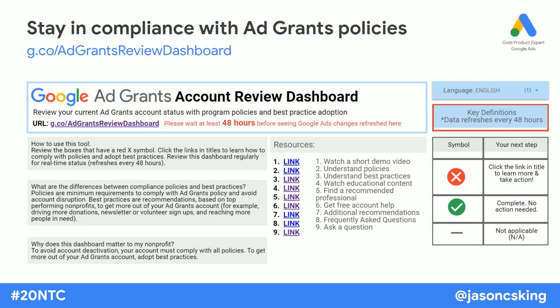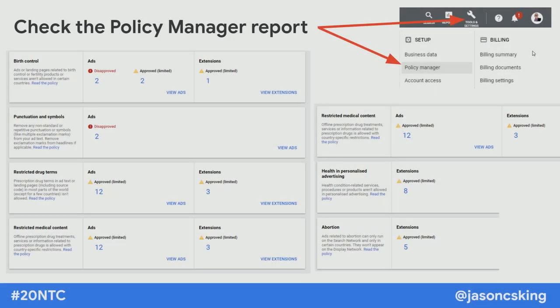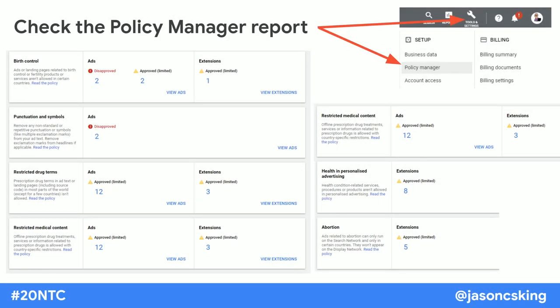You need to stay in compliance — not just with Ad Grants policies, but also with Google Ads policies. There's a very handy dashboard where you can find out what on your account is or isn't in compliance. If you get stuck on what any of this means, go to the Ad Grants community forums and ask there, because someone will happily explain. To check your compliance with Google Ads policies, check the policy manager report — that's up in Tools and Settings in the Google Ads dashboard.